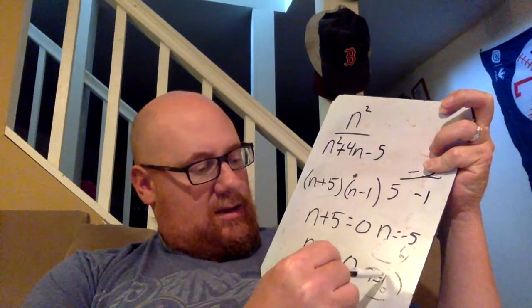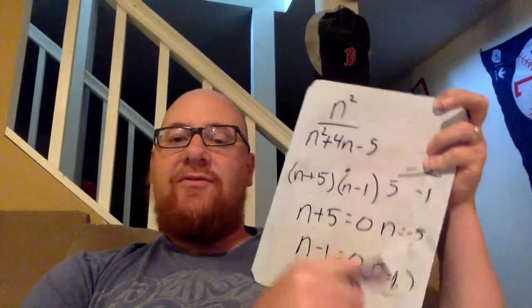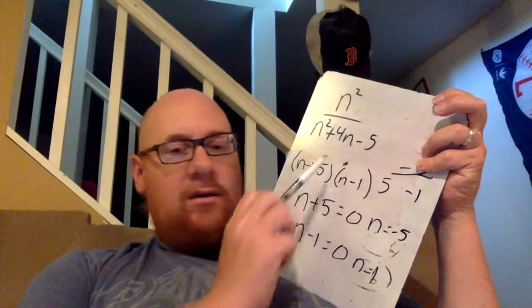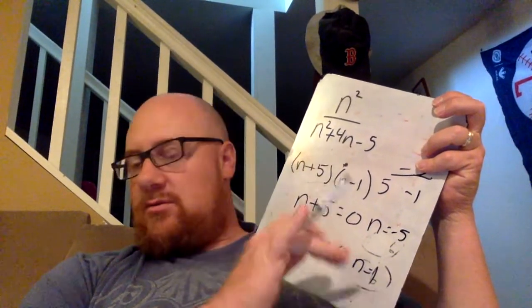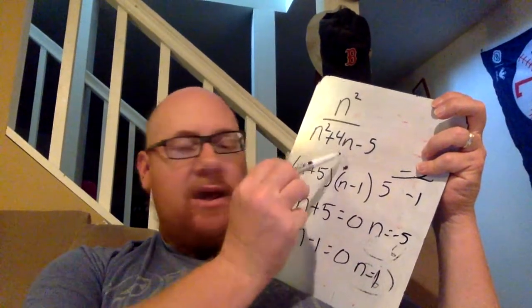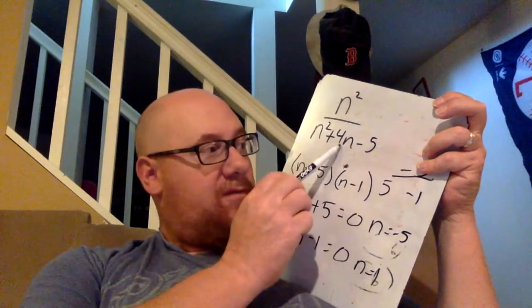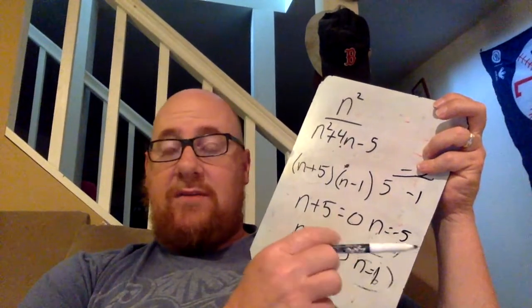So that means five and one are excluded numbers. Those are the two numbers that we cannot use for this function right here because it would give us a zero.